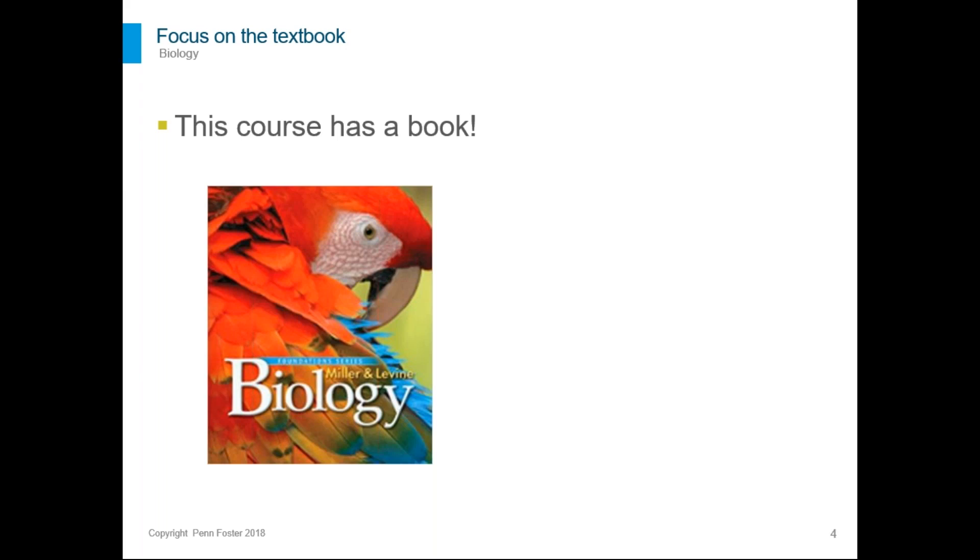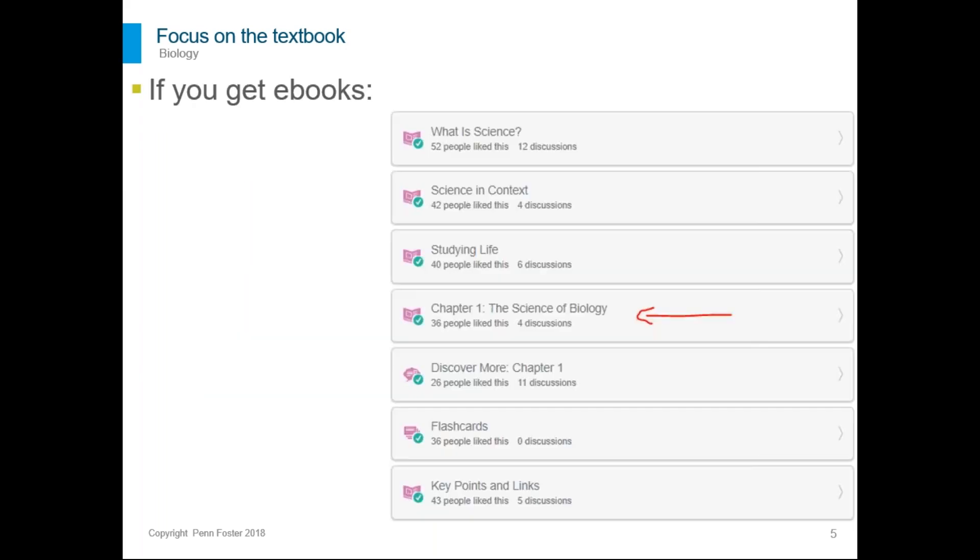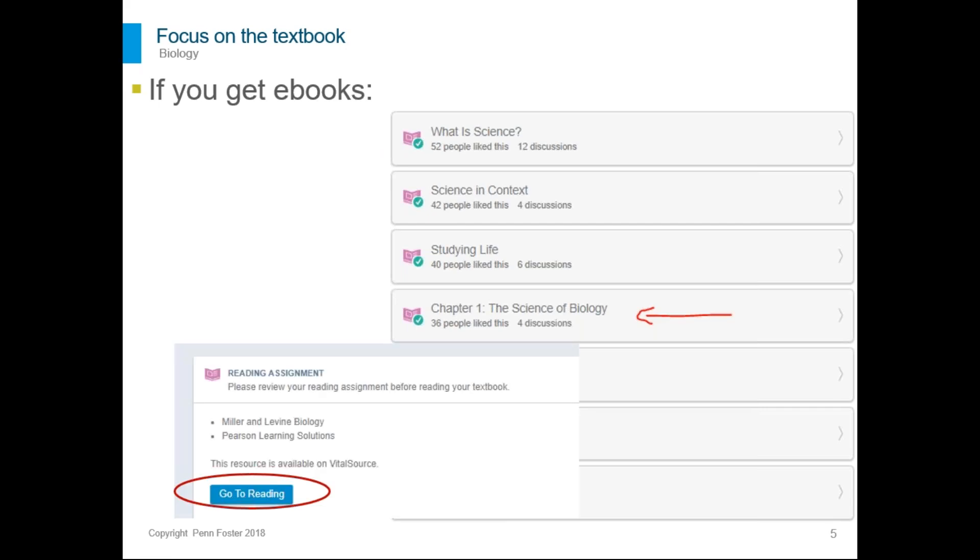If you get the books mailed out this is what you're going to see. If you don't get the books mailed out and you have the e-book, this is how you find it. You look at the assignments for any lesson section and you're going to see the readings from Penn Foster like this first one, but then you'll see chapter one the science of biology or chapter anything else. Anyone that starts with the word chapter, you click on that and that's going to give you this blue go to reading button. You click on that and it'll open up your e-book.